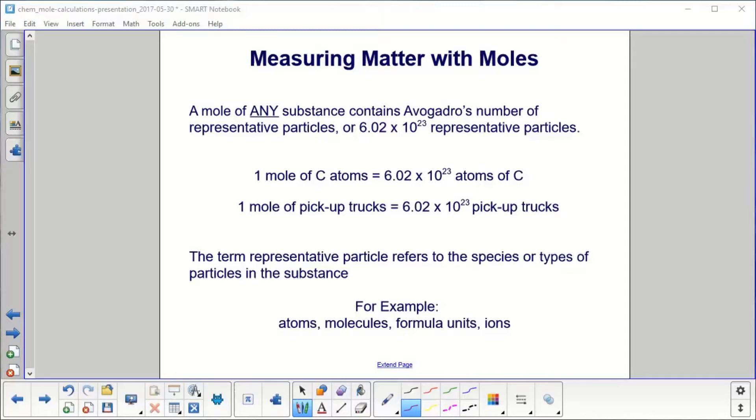A mole of any substance contains Avogadro's number of representative particles, or 6.02 times 10 to the 23rd representative particles. Here are some examples. One mole of carbon atoms equals 6.02 times 10 to the 23rd atoms of carbon. One mole of pickup trucks equals 6.02 times 10 to the 23rd pickup trucks.